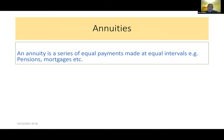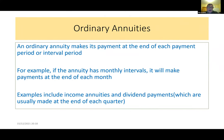The next topic is annuities — a series of equal payments made at equal intervals. Examples include pensions and mortgages. There are two types: the ordinary annuity, where the payment is made at the end of each payment period (e.g., income annuities, dividend payments made at the end of each quarter), and the annuity due, where payments are made at the beginning of each interval.